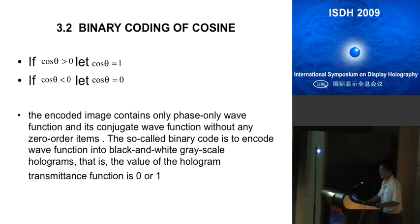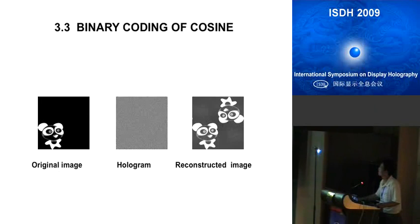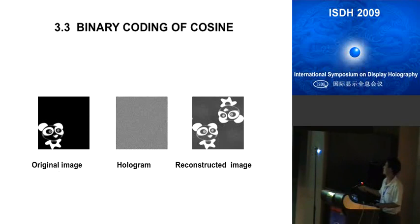After that, we get the binary phase-only hologram. This is the original image — a panda — and this is the binary phase-only hologram. And this is the reconstructed image generated by the computer.